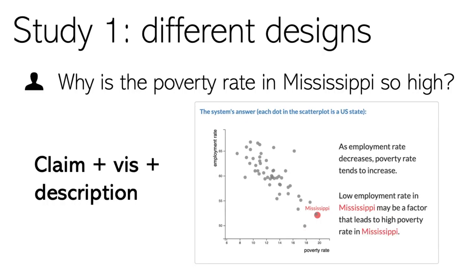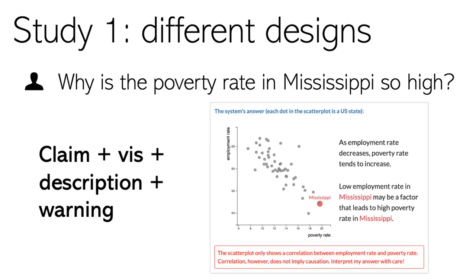In the third design, we further added a textual description that describes the correlation between the two variables. In the final design, there is a message that warns participants that although it seems that there is a correlation between the two variables, correlation is not causation.